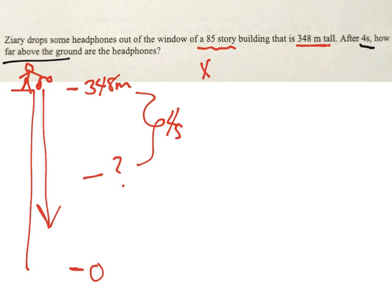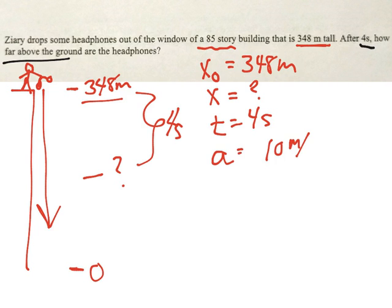So I put this in as a little trick. 85 stories, we don't ever use that unit. Really what we care about is that it's 348 meters tall. Let's draw our building. We got Zai on top and he drops his headphones. He is originally at 348 meters, let's call our ground zero.